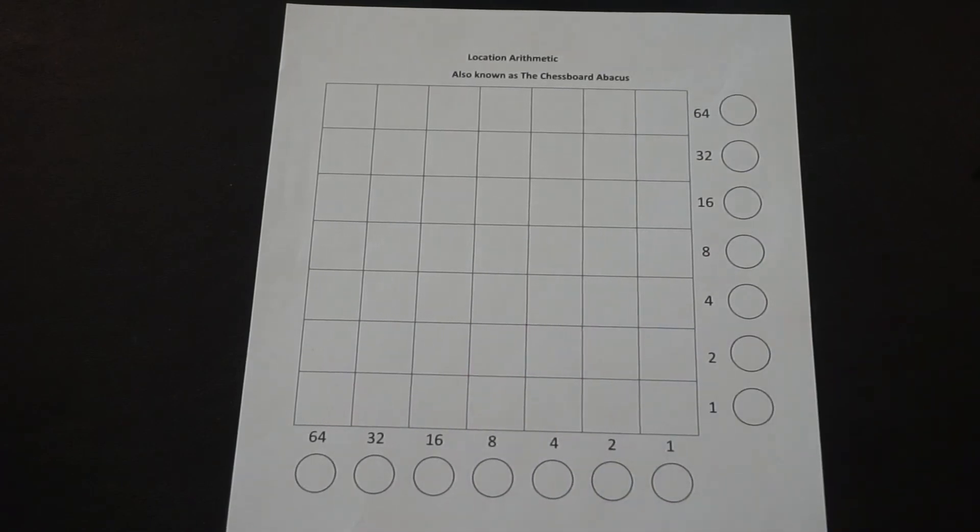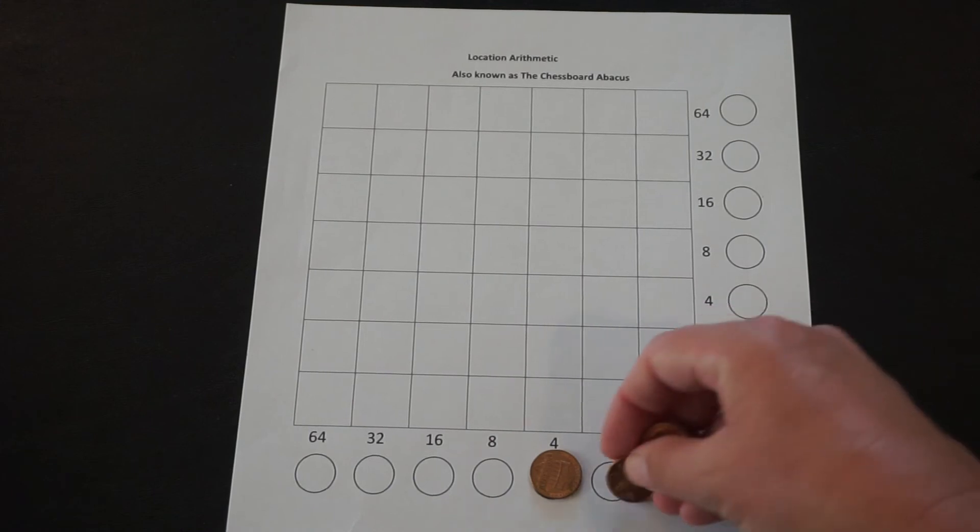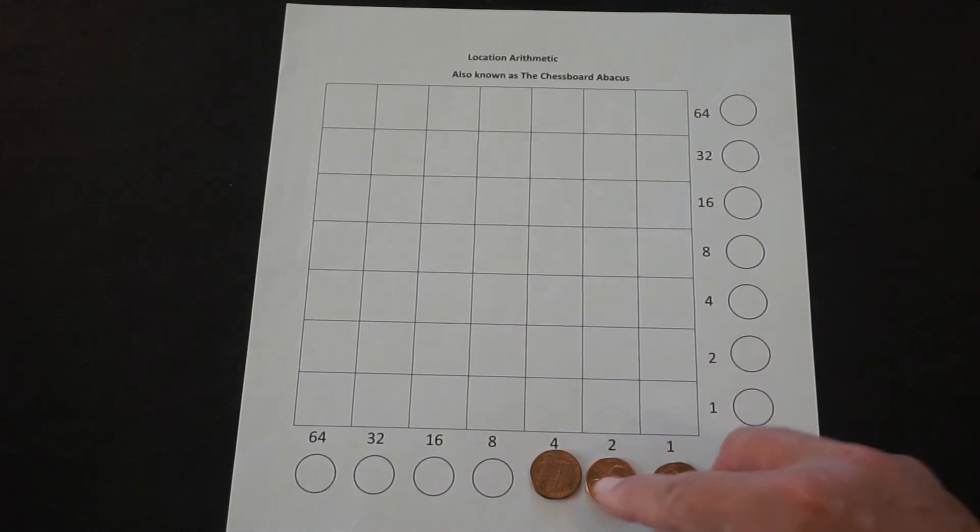If I want to work with the number 7, it's going to be 4 plus 2 plus 1. That's equal to 7.